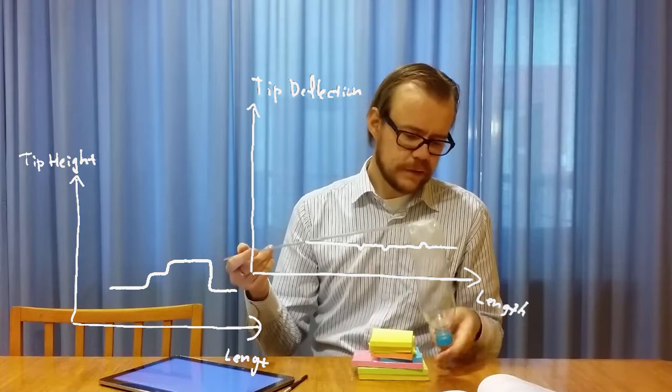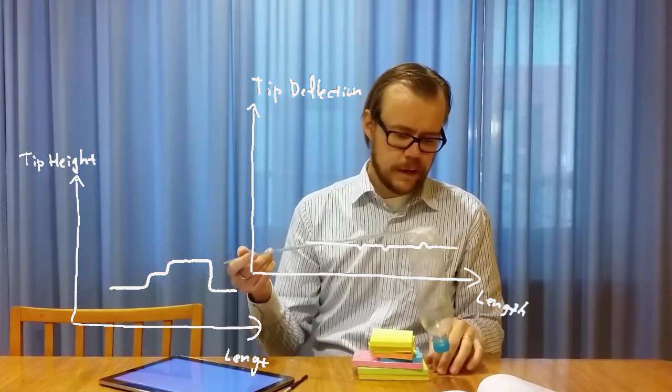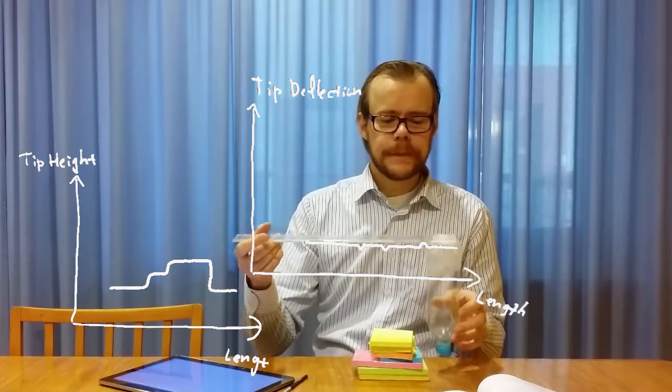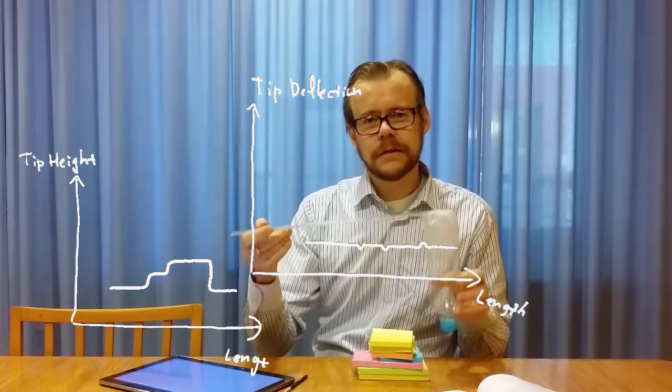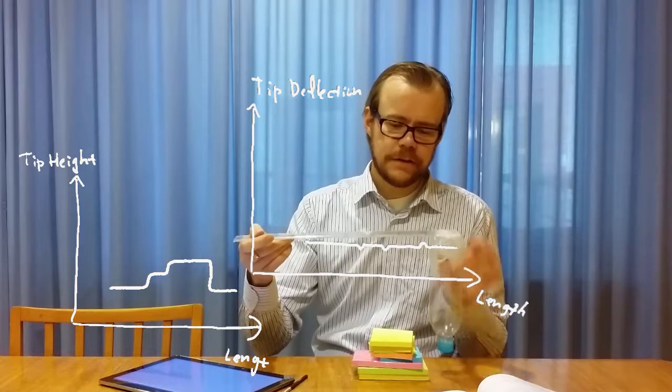So that is the main idea with atomic force microscopy. You measure the forces that interact between the tip and the sample. And a way to measure that is to use something with a known force and measure the relative change of that. So here we use the cantilever.